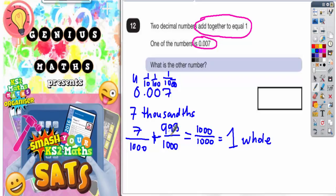The question is, nine hundred ninety-three thousandths, what is that as a decimal? Nine hundred ninety-three thousandths would be 0.993, in the same way that seven thousandths is 0.007. Add those two together, you're going to get a whole one. So your answer is 0.993.